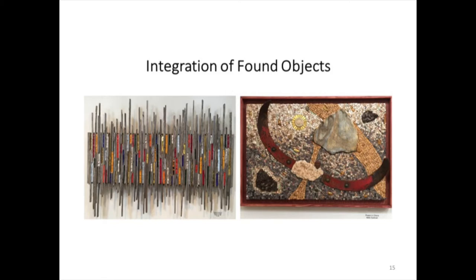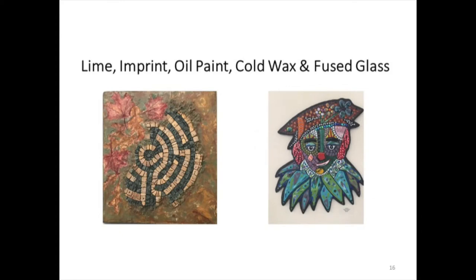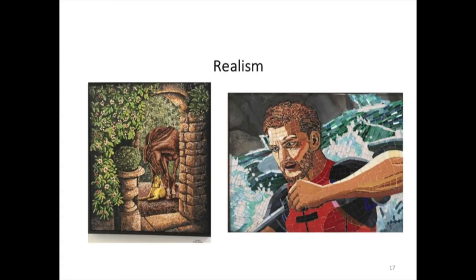And you get a really neat effect. This one here uses smalti, which is a really thick mosaic tile, and line. What she did is she quickly pressed leaves into the plaster and then painted them with oil. Realism.